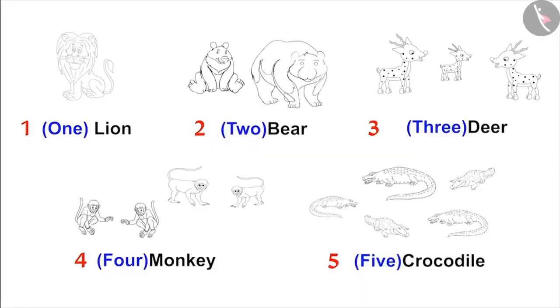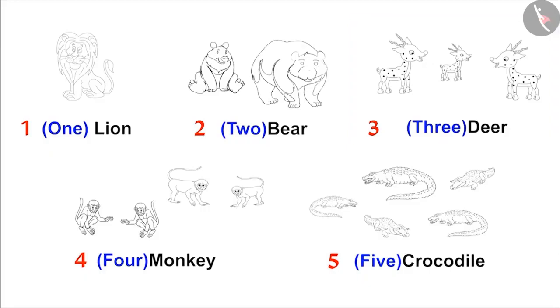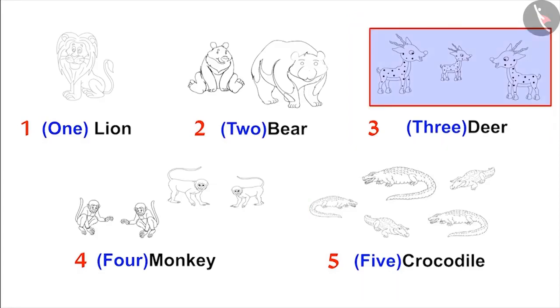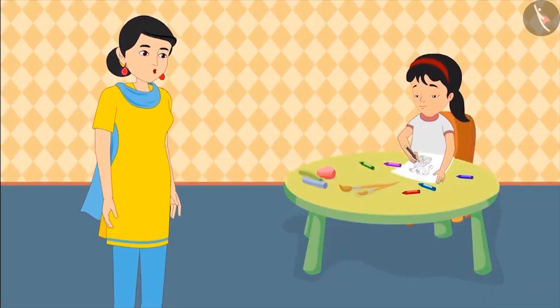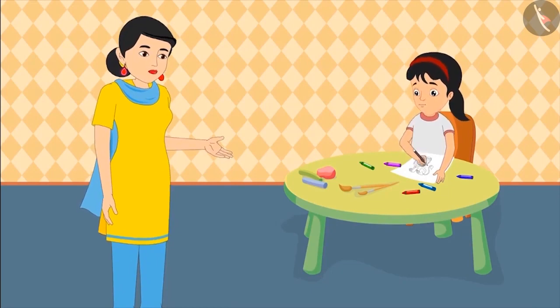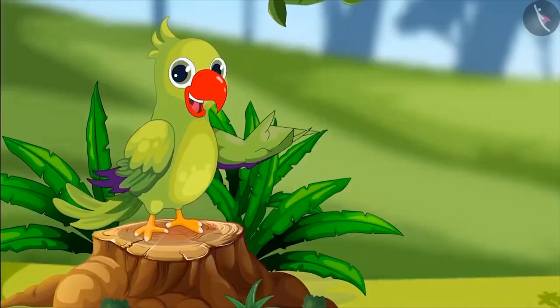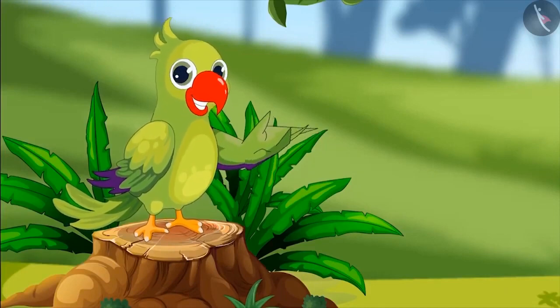Very good, Pinky. Now tell me, are there fewer animals in the deer group or in the crocodile group? There are three animals in the deer group and five animals in the crocodile group. Amongst numbers, three is less than five. Therefore, there are fewer animals in the deer group. Very good, Pinky. Now quickly wash your hands and come. Let me serve you food. So children, in this example, you saw how Pinky compared the number of different animals.